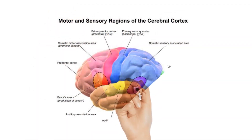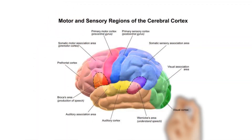In the motor output area, the motor areas — Broca's area, the pre-motor area, and the motor area — control the movement of muscles involved in vocalization and writing.